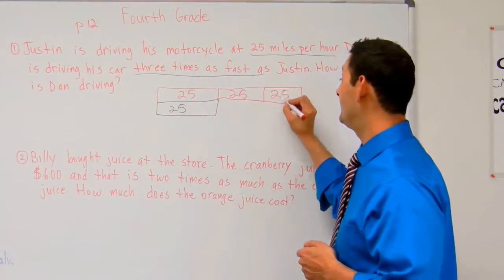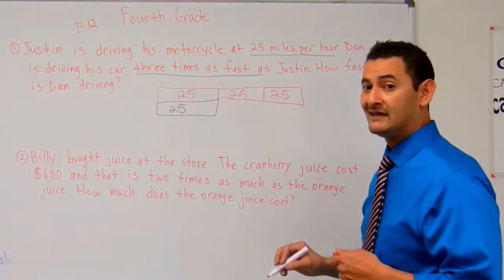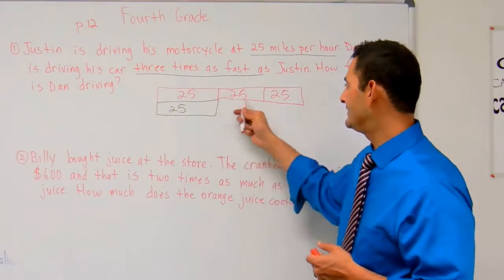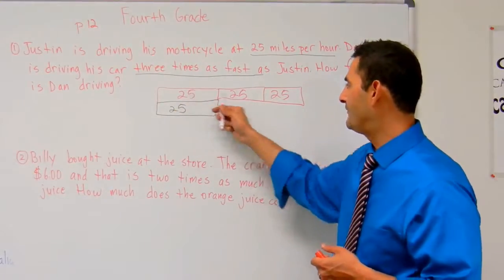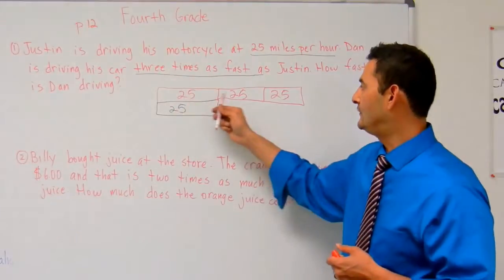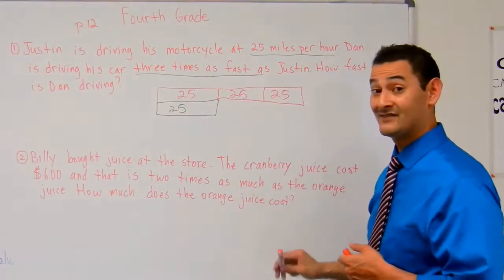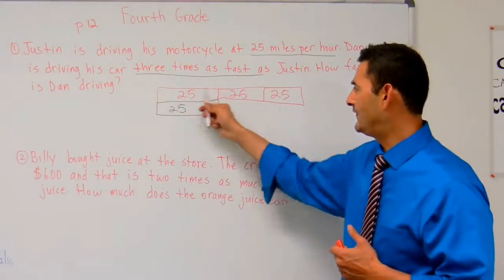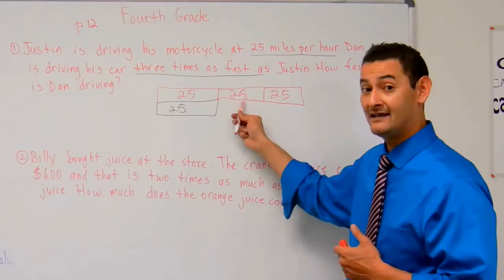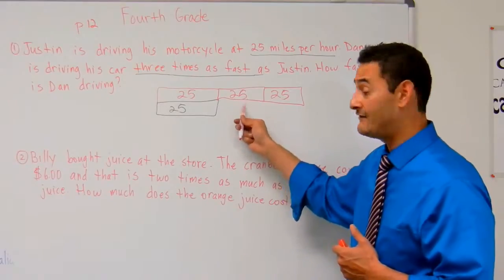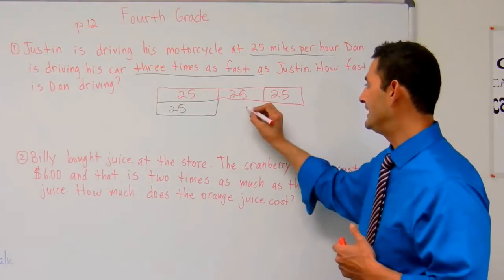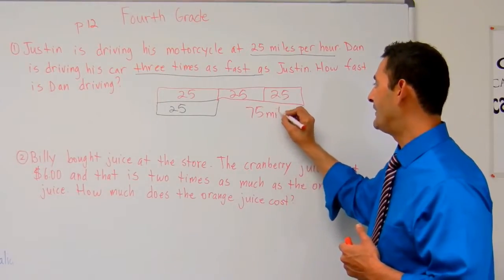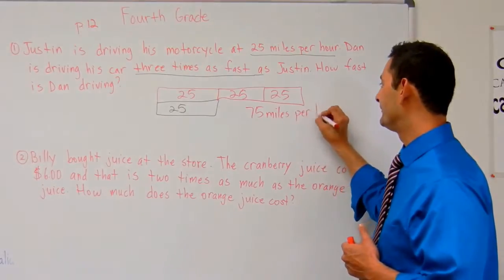Now how do I solve that? I can add it. We have 2 tens there and 5 ones there. So it's going to be 2, 4, 6 — we have 6 tens, that's 60, plus 5 plus 5, that's another 10. So 60, 70, plus 1 more — he's driving 75 miles per hour.